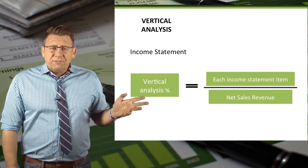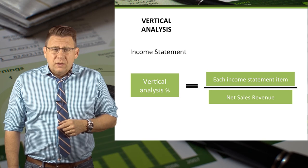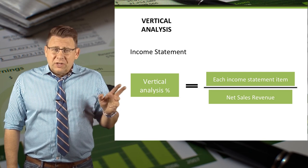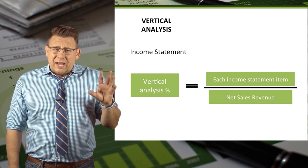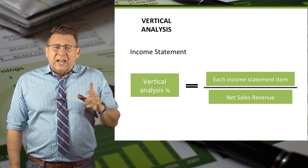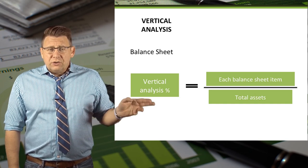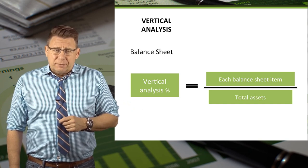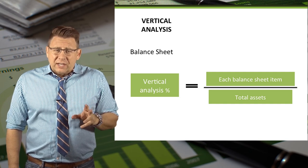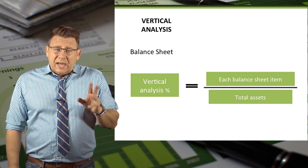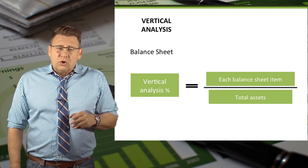Here you can see the formula for income statement items. The vertical analysis percentage is an income statement item divided by net sales revenue. Here you can see the formula for the balance sheet items. The vertical analysis percentage is a balance sheet item divided by total assets.